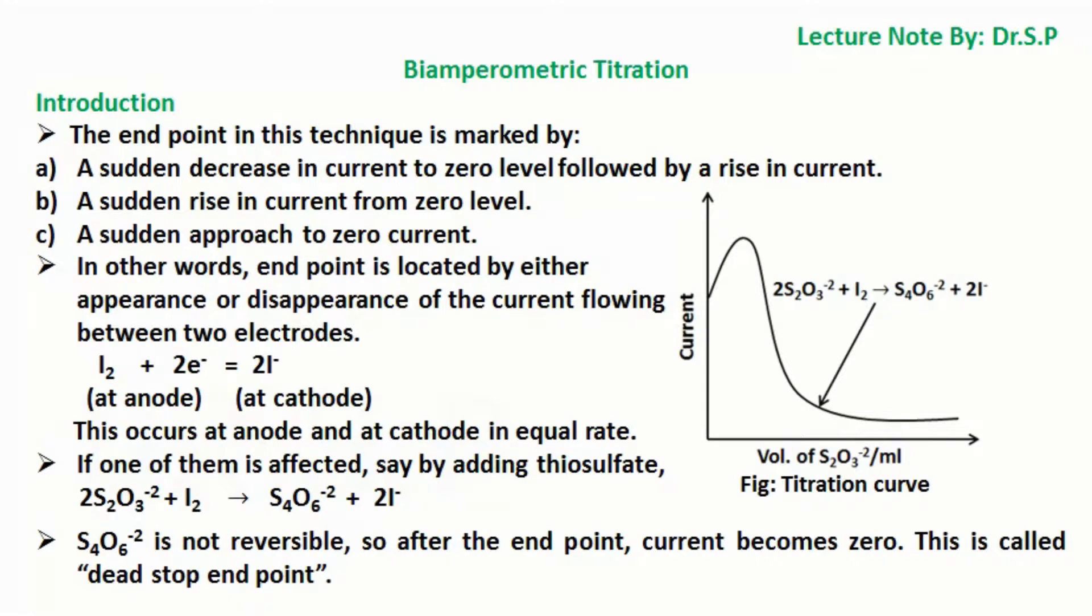Iodine I₂ reacts with two electrons to give iodide ion, occurring at anode and at cathode in equal rate. If one of them is affected, say by adding thiosulfate, the tetrathionate anion S₄O₆²⁻ is not reversible. So after the end point, current becomes zero. This is called dead stop end point.